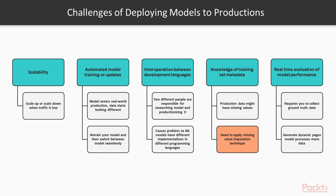The last real challenge is real-time evaluation of model performance. Evaluation of a model's performance in production often requires you to collect ground truth data and generate dynamic pages as a model processes more data. Also, you might need to carry out A/B testing by deploying two or more models serving the same functionality simultaneously to evaluate performance in production. In this video, we've learned about building an image correction system using DCGAN.